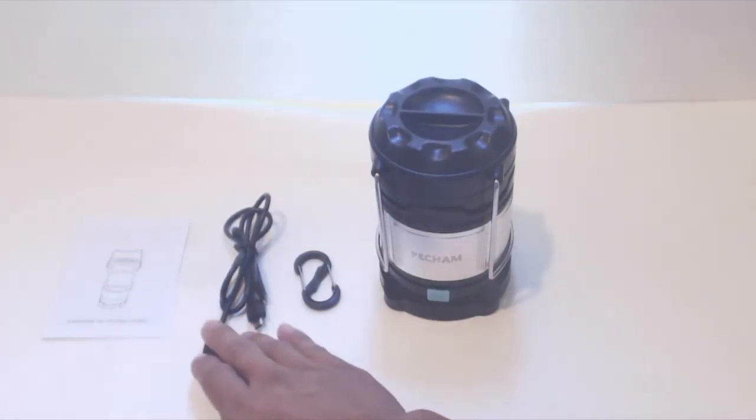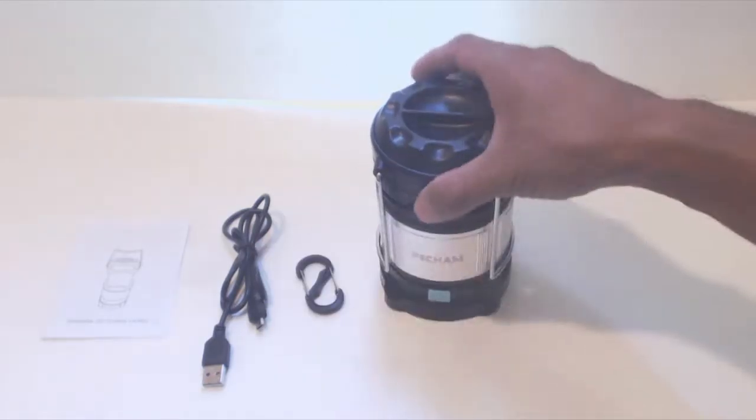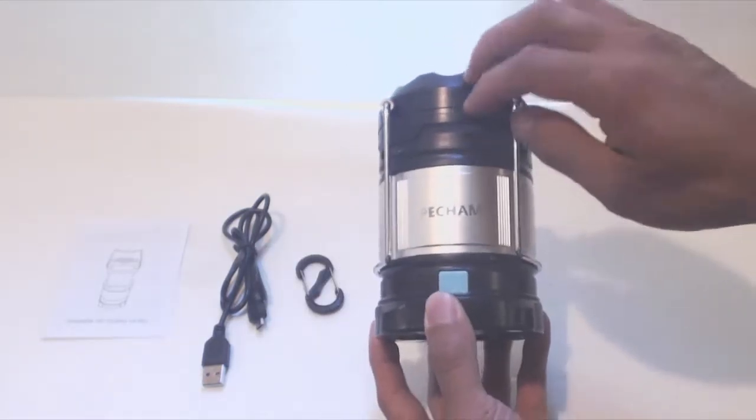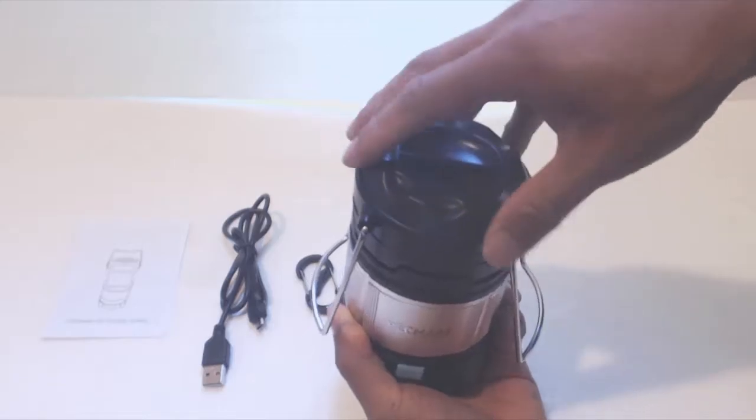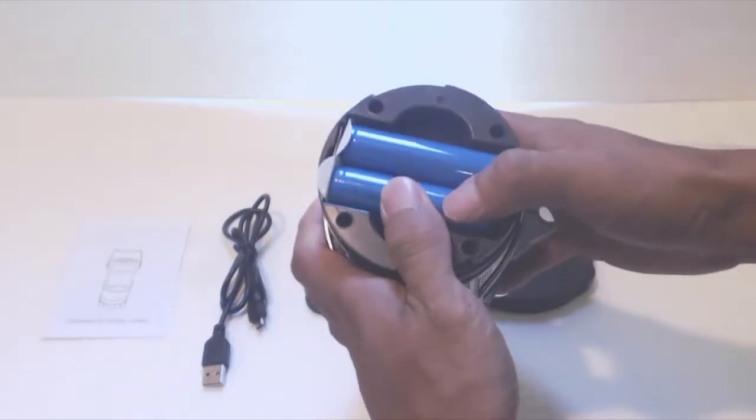You'll get an instruction sheet, 32-inch micro-USB charging cable, plastic double-sided carabiner, and the lantern. The lantern is made of plastic with an aluminum case around the light and steel alloy handles. It has a 3.5-inch diameter and stands 5 inches tall. There are three ways to power the lantern.